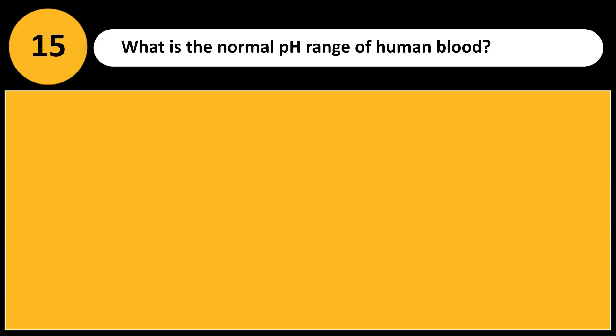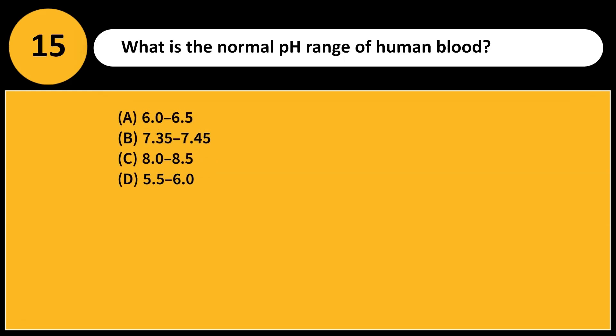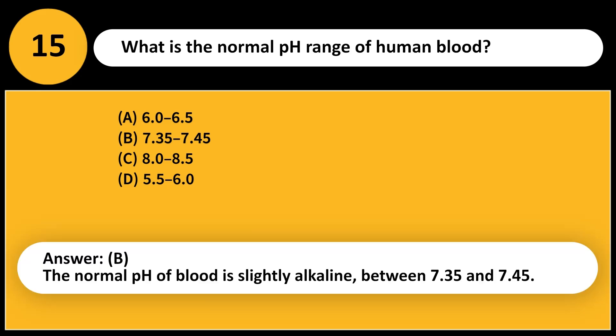What is the normal pH range of human blood? A. 6.0 to 6.5. B. 7.35 to 7.45. C. 8.0 to 8.5. D. 5.5 to 6.0. Answer: B. The normal pH of blood is slightly alkaline, between 7.35 and 7.45.